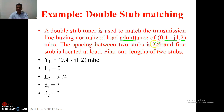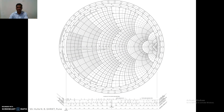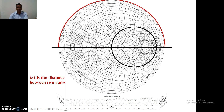In this case two circles on the Smith chart are important: one is the r = 1 circle, where stub number two is going to lie, and the other circle is where stub number one is going to lie.